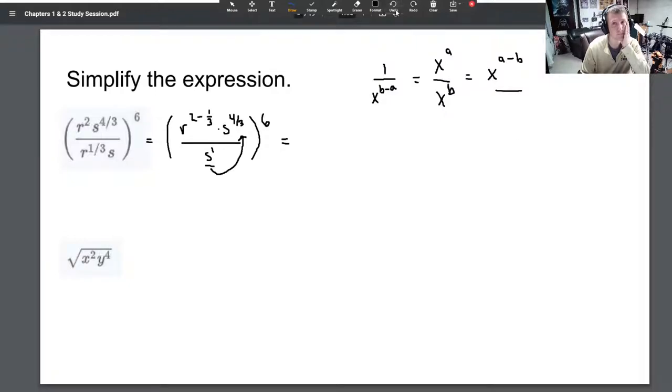So this is now r to the two minus one-third. I'm just gonna go ahead and do that subtraction—two is six-thirds, subtracting one-third makes it five-thirds. Then we have s to the four-thirds minus one.